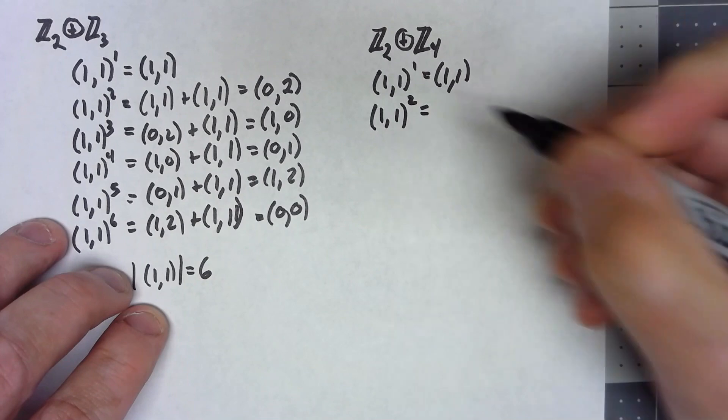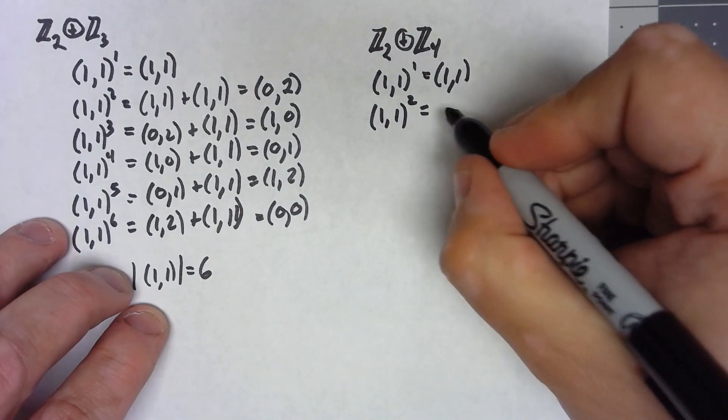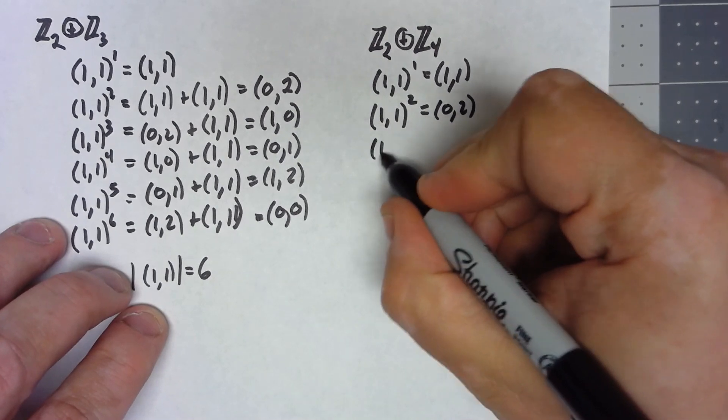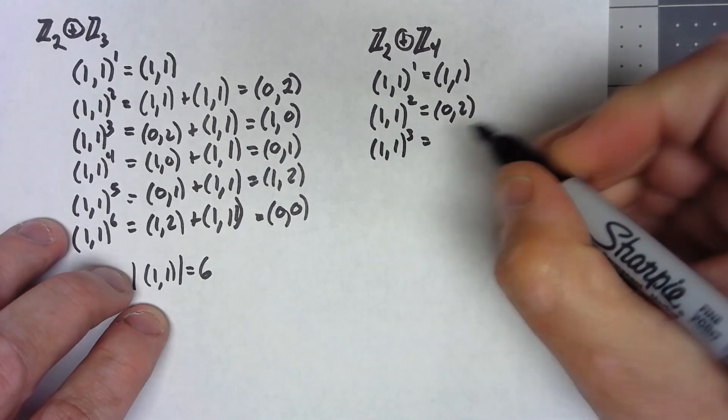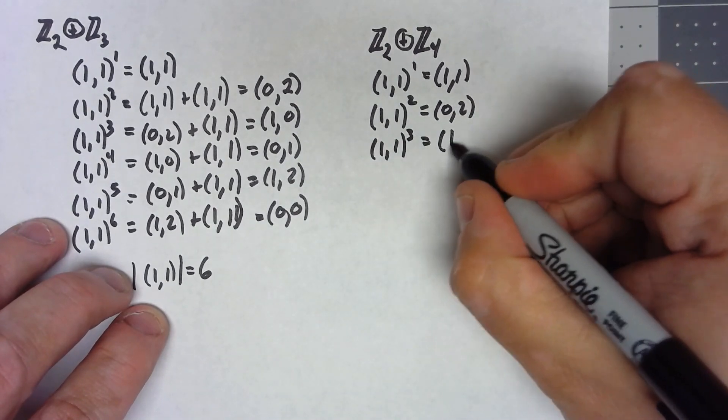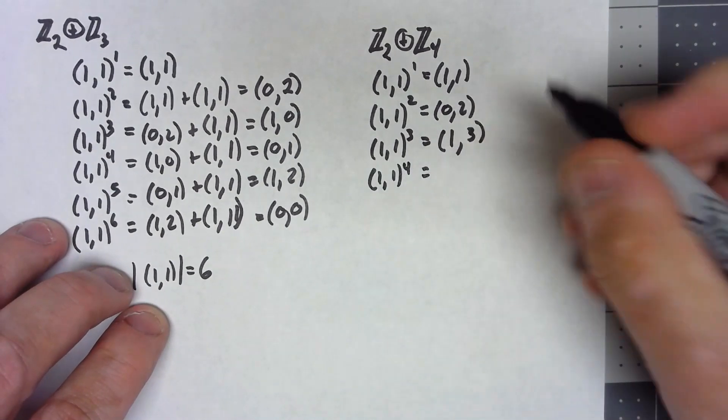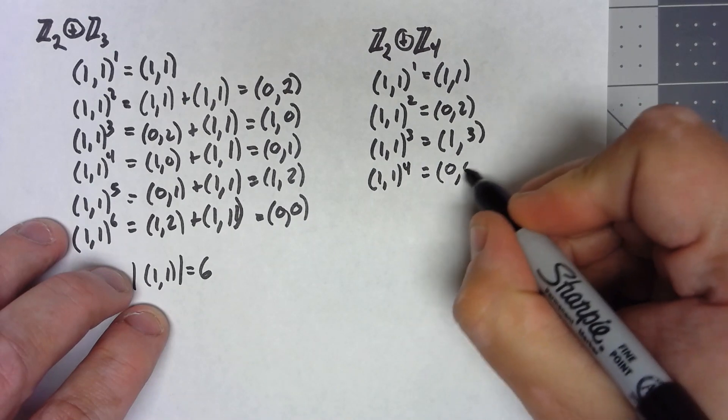Well, (1,1) squared: (1,1) plus (1,1) would give me (0,2). (1,1) to the fourth would give me (0,0).